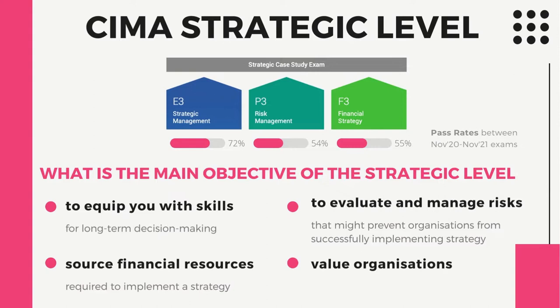P3 is part of the strategic level, which consists of three objective tests and one case study. The objective tests have to be taken and passed before moving on to the case study exam. The objective tests are: E3, which focuses on strategic management; P3, which focuses on risk management; and F3, which focuses on financial strategy.